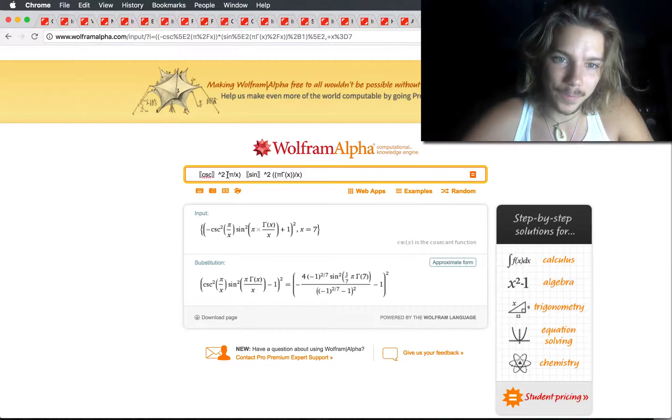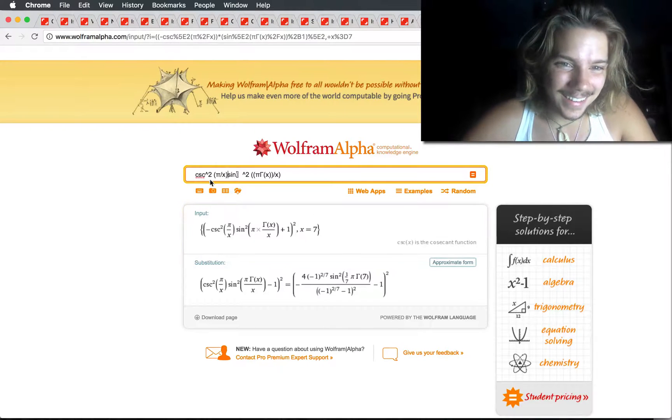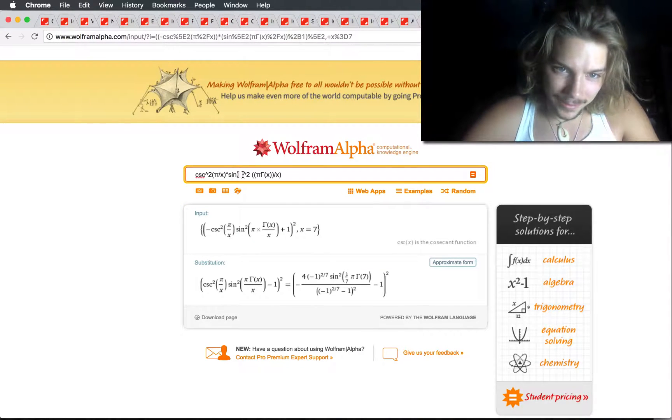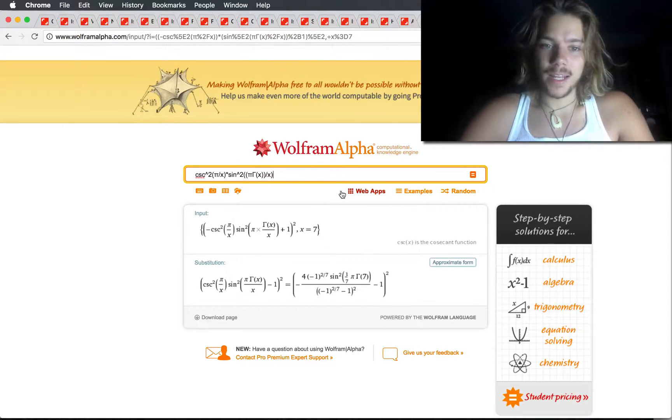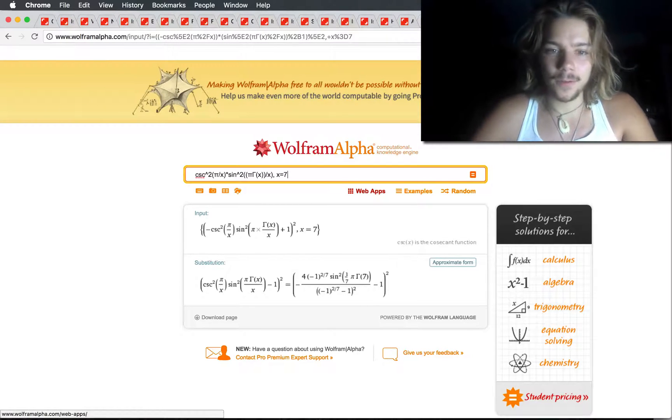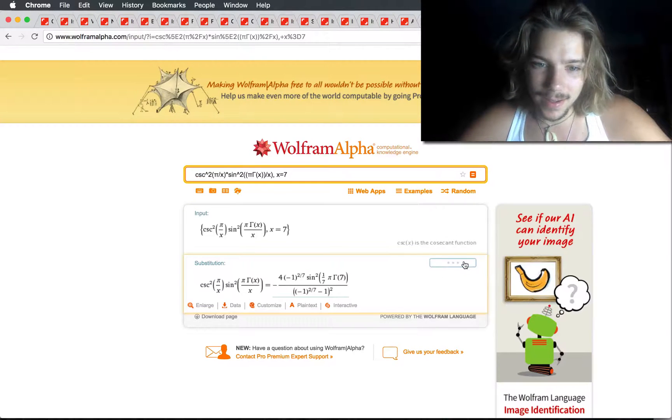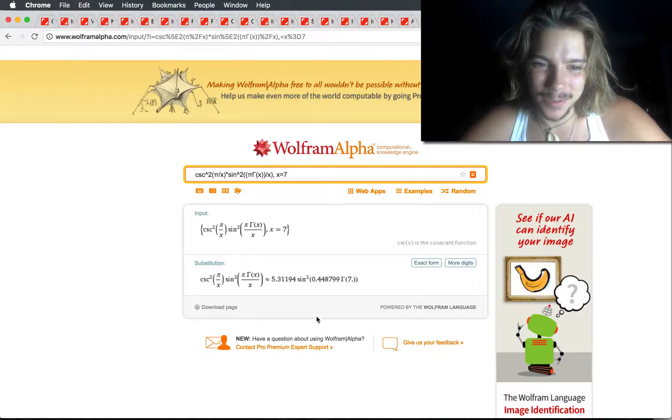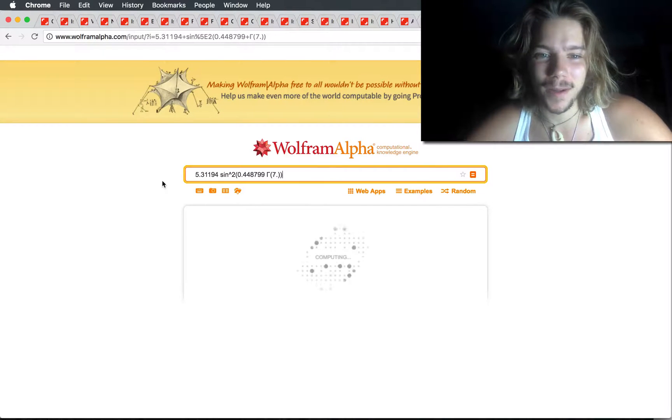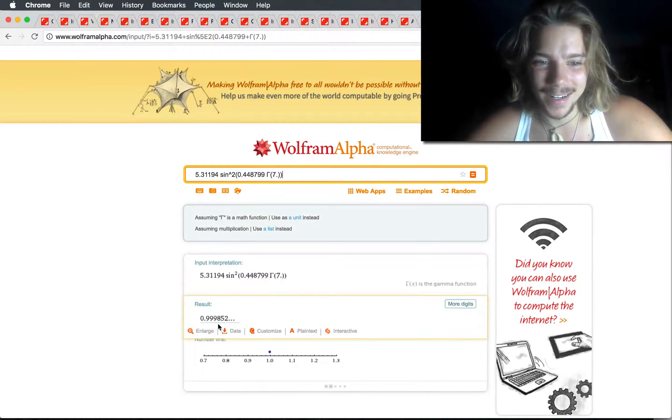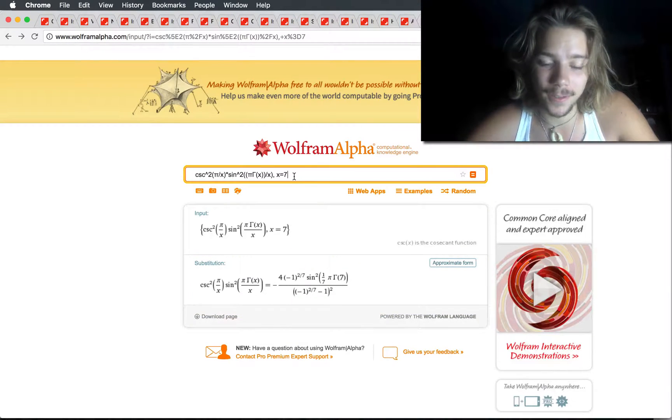But I will show you the function itself, just so you can see. It's essentially this, it's cosecant squared of pi over x times sine squared of pi gamma x over x. So I'll give you an example for 7, which is prime, this will return 1. And our answer, Wolfram alpha I don't think properly computes this, but I will copy-paste the solution and you'll see it is 1. There might be a rounding issue, 0.999, but it's 1. The reason it doesn't exactly say 1 has to do with some rounding errors in Wolfram alpha.